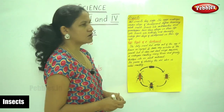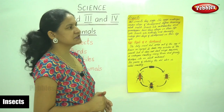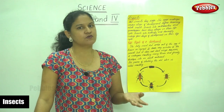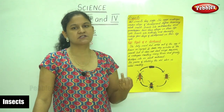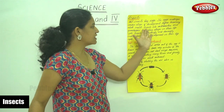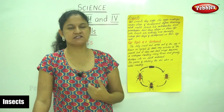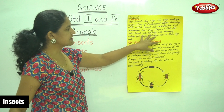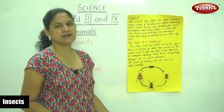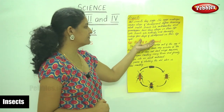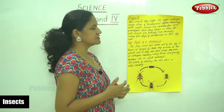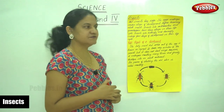Insects like cockroaches and grasshoppers have three stages in their life cycle. Normally we have seen that there are four stages in the life cycle: growth, development, reproduction, and death. But in the case of grasshoppers and cockroaches, they have only three stages. Other insects like butterfly and housefly undergo four stages of development in their life cycle.